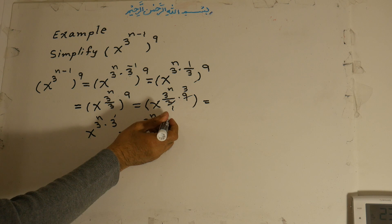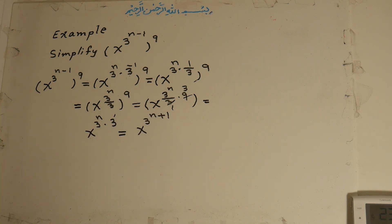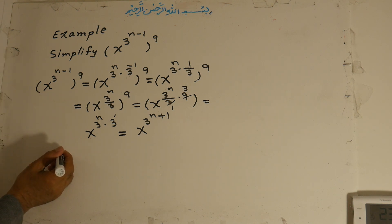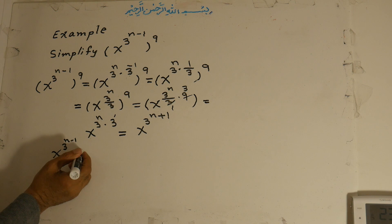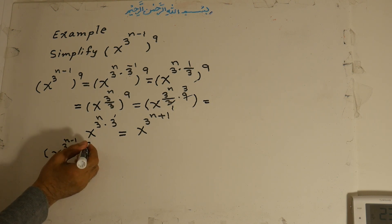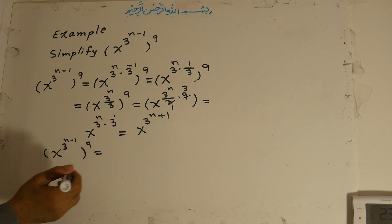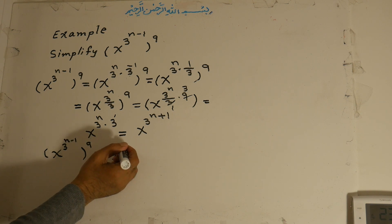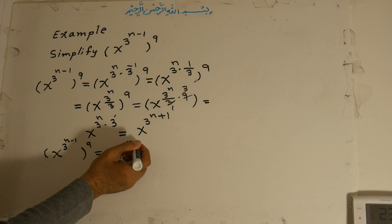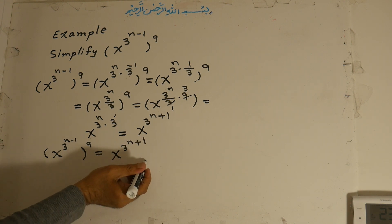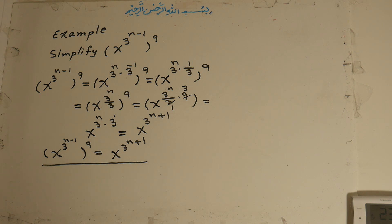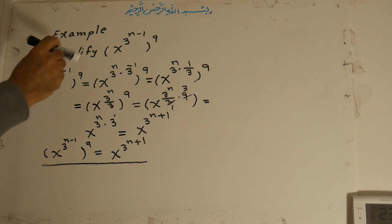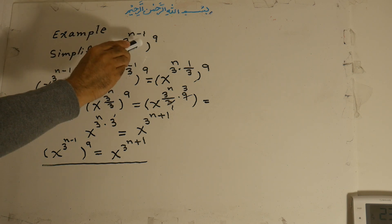So x to the power of 3, all to the power of n minus 1, to the exponent of 9, is equal to x to the power of 3 to the exponent of n plus 1. This is the answer for this question. To repeat: simplify x to the power of 3, all to the power of n minus 1, all to the exponent of 9.